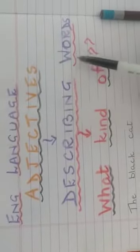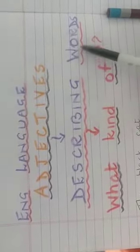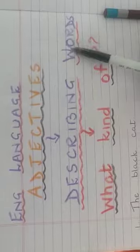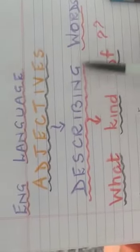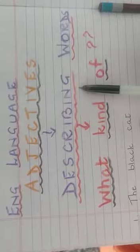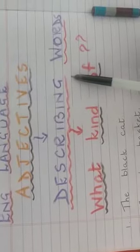Now what are adjectives? Adjectives are describing words. They tell you about something. They are called describing words because they tell you about the noun.